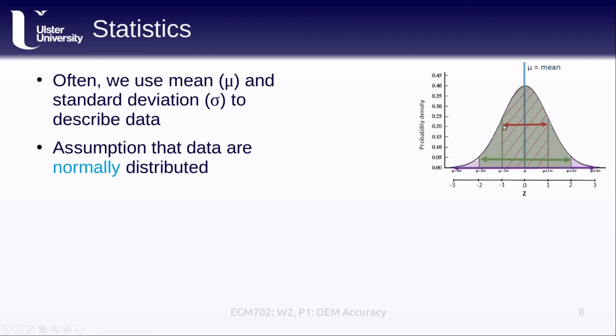And then we have some different lines here that denote the spread within one standard deviation of the mean. This is where about 67% of our data fall if we have a normally distributed data set. Within two standard deviations of the mean, we have about 95% of our data, again, if we're following a normal distribution. And within three standard deviations of the mean, we have 99% of our data. This is the assumption that we're using when we start describing our data set or our differences using the mean and the standard deviation.